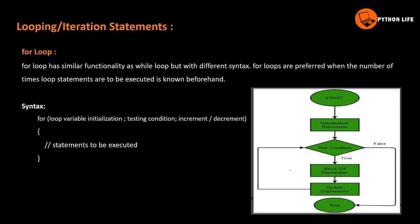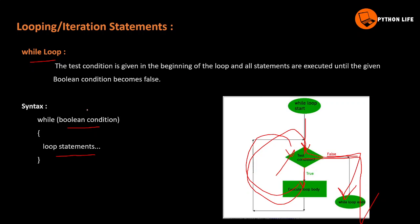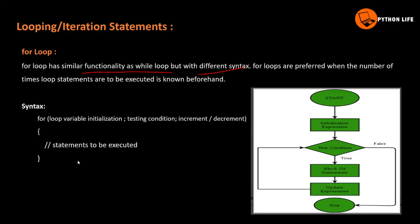Next is the for loop. The for loop has similar functionality to the while loop but with different syntax. The difference between do-while and for loop is that in do-while, the statement executes first; but in the for loop, if the condition is false initially, it will not execute at all.